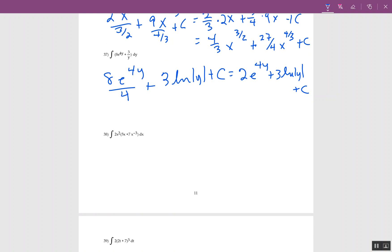Number 38 has 2x squared times 5x plus 7x to the negative 3. It's really important that the 5x plus 7x to the negative 3 doesn't have a power. So this is not substitution. Since it's not substitution, I multiply as a simplification step. So 2 times 5 is 10. x squared times x is x cubed. 2 times 7 is 14, and x squared with x to the negative 3, that's 2 plus negative 3 equals negative 1 dx.